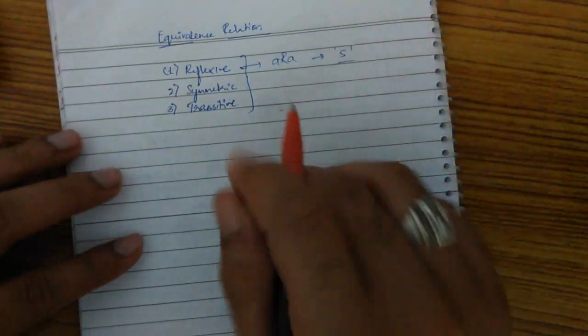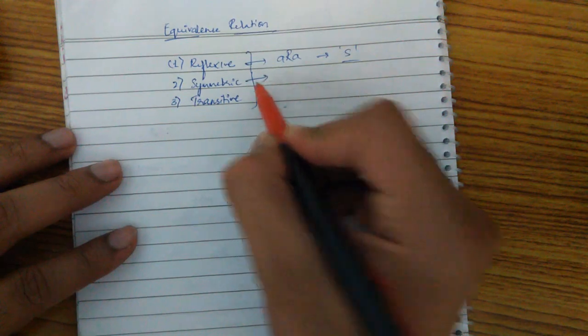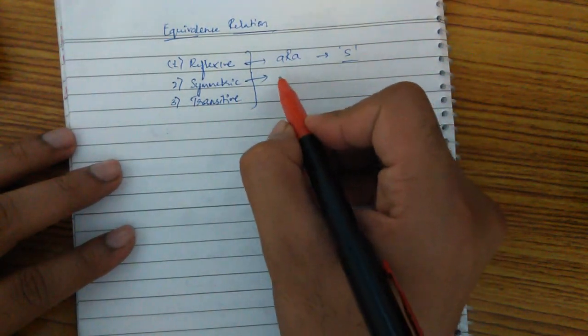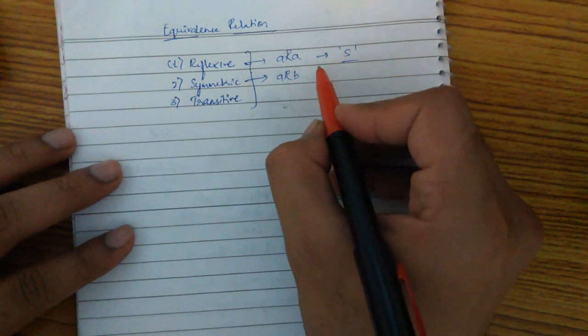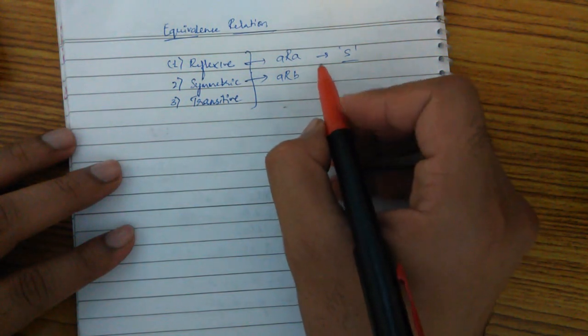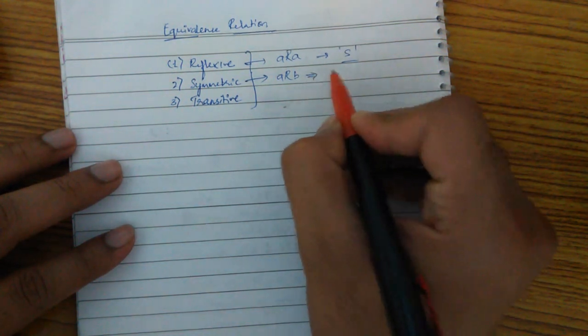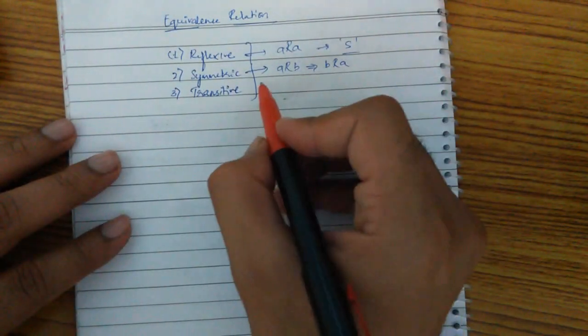And what is symmetric? Symmetric is: A relates to B implies that B relates to A. This is symmetric.